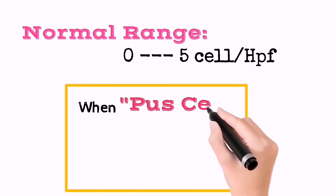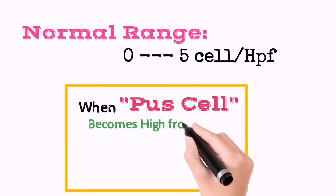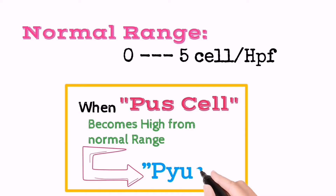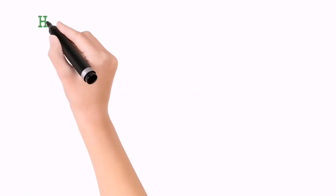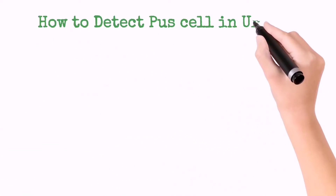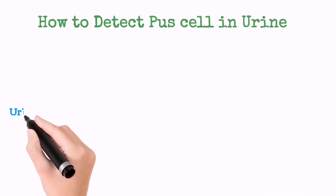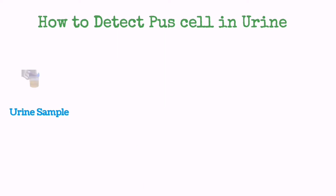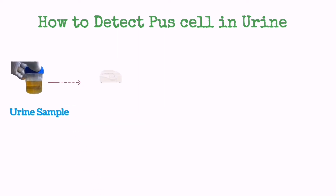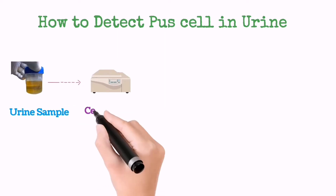If the number of pus cells increases in urine, the condition is called pyuria. The test used for detecting pus cells in urine is urinalysis, in which first you will collect a urine sample from the patient.